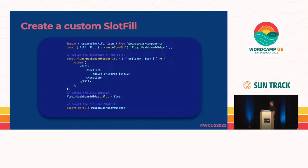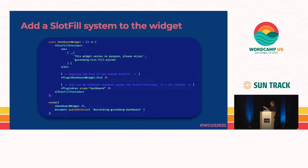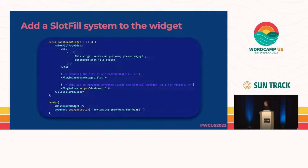Then I create a custom slot fill — it's a very simple one. When that's done, I add the SlotFill system to the widget by creating my dashboard widget component. I take the SlotFill Provider and wrap the whole thing. I add a little bit of markup — just a title — then expose the slot. Then I create a custom PluginArea with the scope of 'dashboard'. This can be rendered anywhere inside the slot provider; it doesn't matter where.